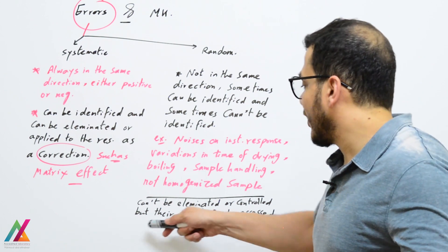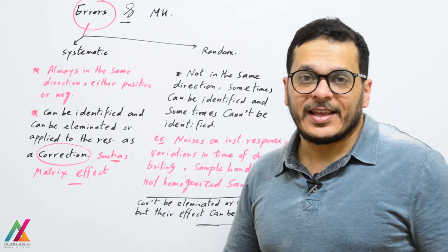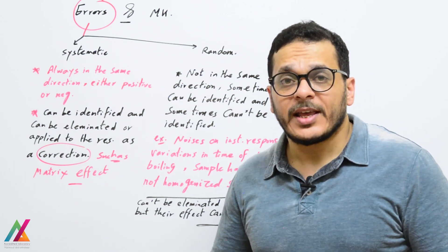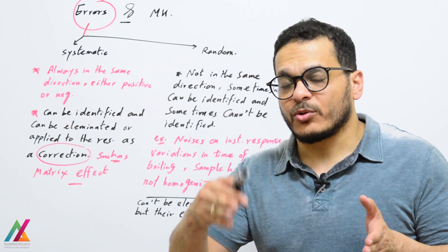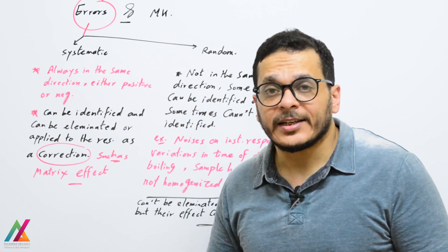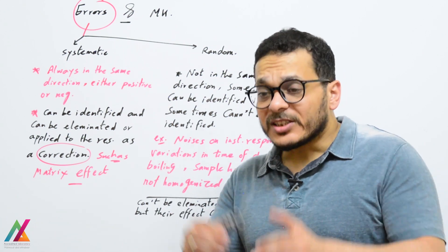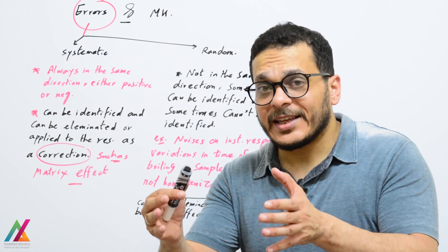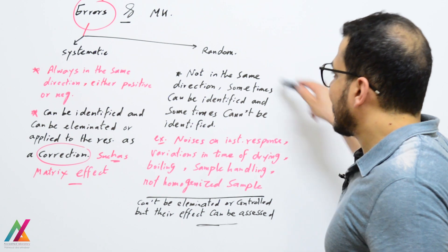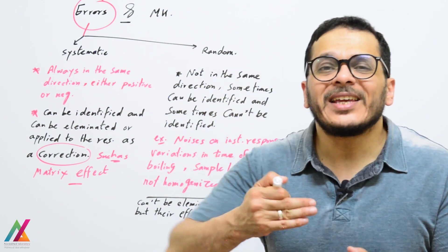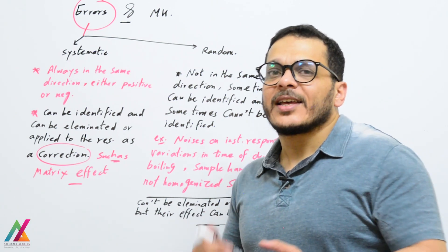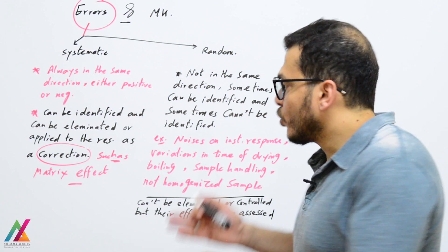You can only assess the effect of random errors. To do so, you include a spiked sample with every sequence and calculate the recovery for that spike sample. This recovery should be within the acceptance range according to the guideline used. If you don't get the acceptance range, you have to repeat the analysis. If after repeating you get the acceptance range, that means there were random errors present.